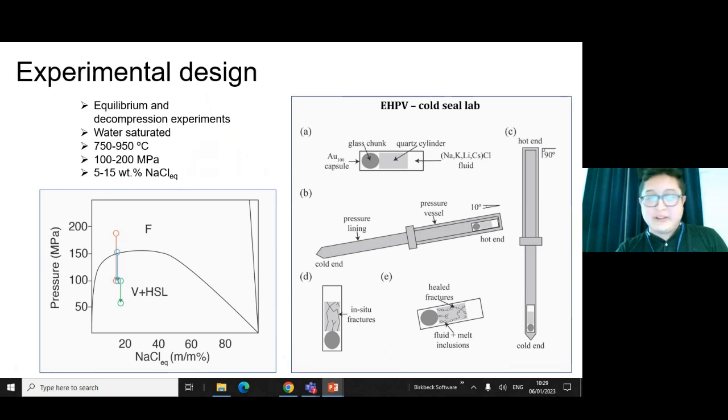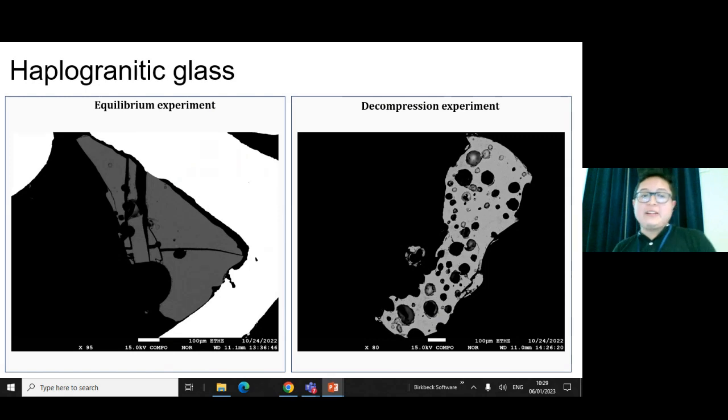This is how it looks. As a comparison, on the left side you have an equilibrium experiment—it has bubbles because it's a water-saturated experiment. But on the other side you have way more vesicles when you have the decompression. This shows us in a textural way that we are going in the right direction.